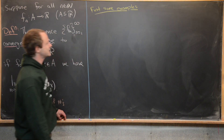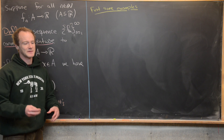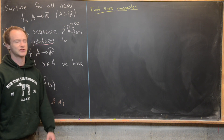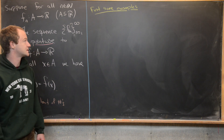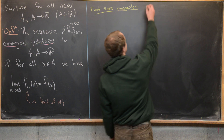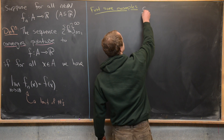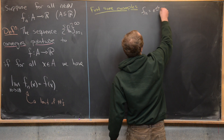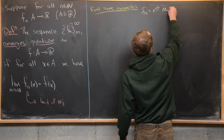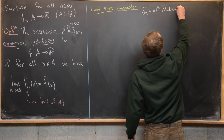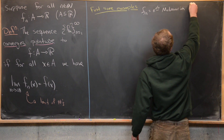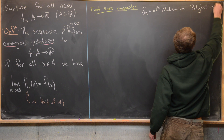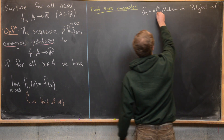So let's look at some basic examples first, and then we'll look at maybe some more interesting examples. The first example I want to look at is: let's say we've got f_n equal to the nth Maclaurin polynomial of f.